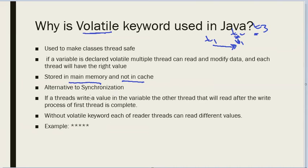It's an alternative to synchronization. If a thread writes a value in the variable, the other threads will read it only after the write process of the first thread is complete. So if thread one wants to write to variable v1, thread two and thread three will only read after the write operation is finished.